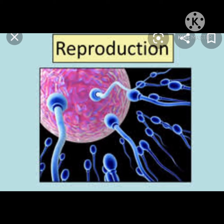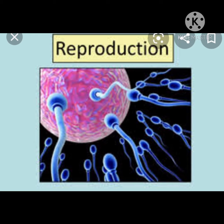Next, we have to study some important terms on page numbers 105 and 106 — that is about oviparous and viviparous animals. Oviparous animals are those animals which lay eggs. Instead of giving birth to young ones, they lay eggs, and the eggs hatch into the young ones.